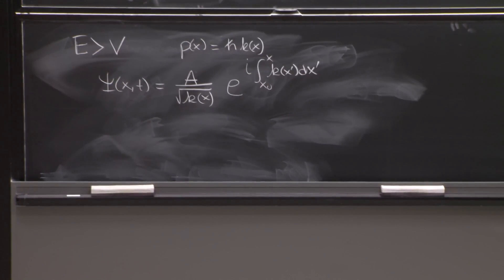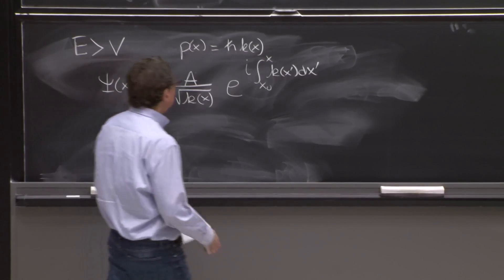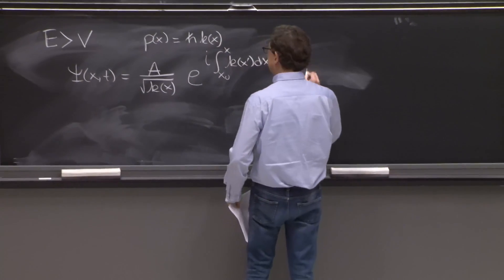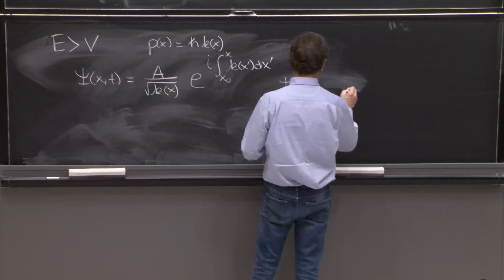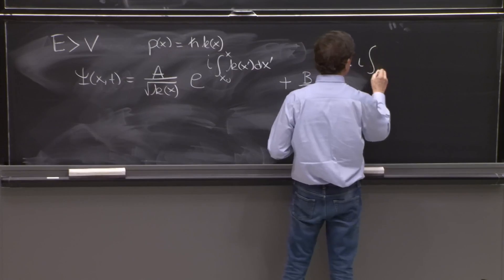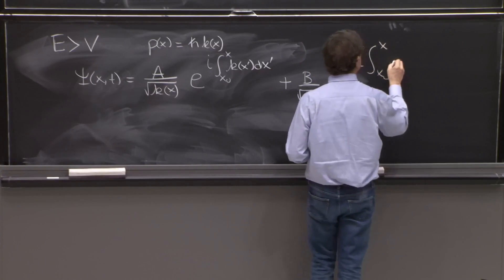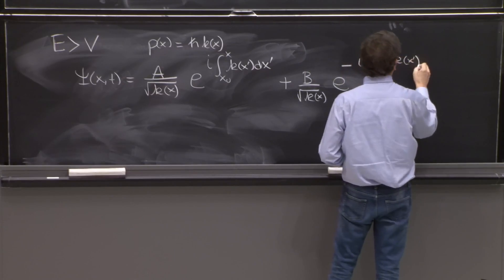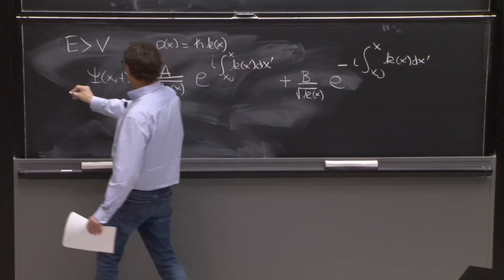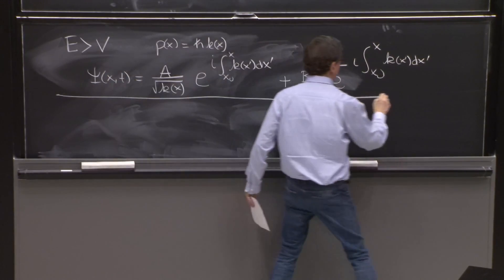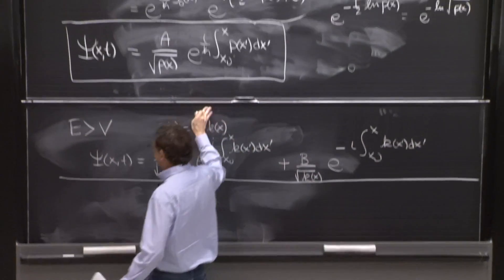I just replaced, used the opportunity to replace p for k, which simplifies your life, simplifies all this constant. So the other solution is the wave moving in a different direction. So 1 over square root of k of x, e to the minus i, x0 to x, k of x prime, d of x prime. So that is your solution when you have e greater than v.